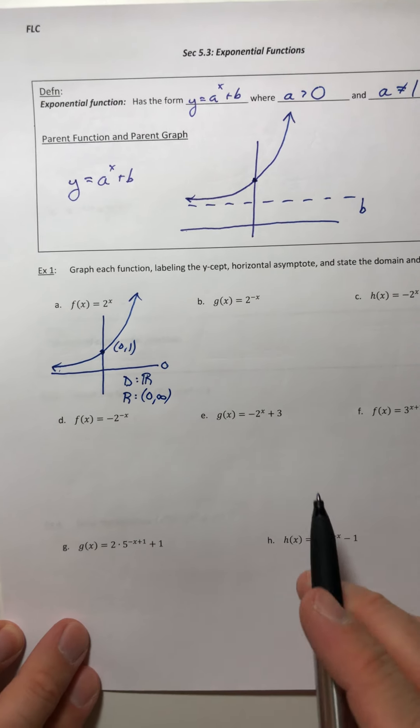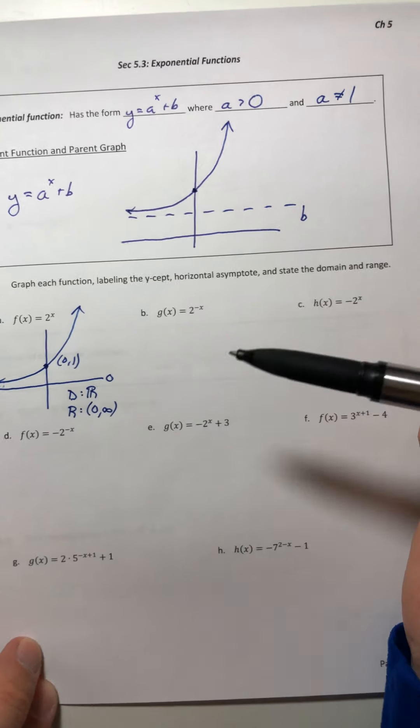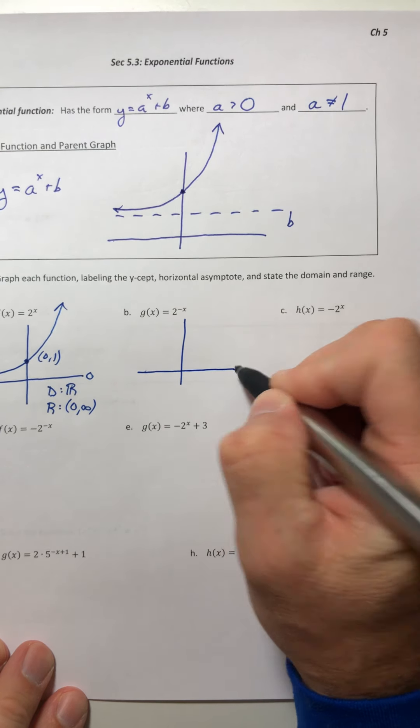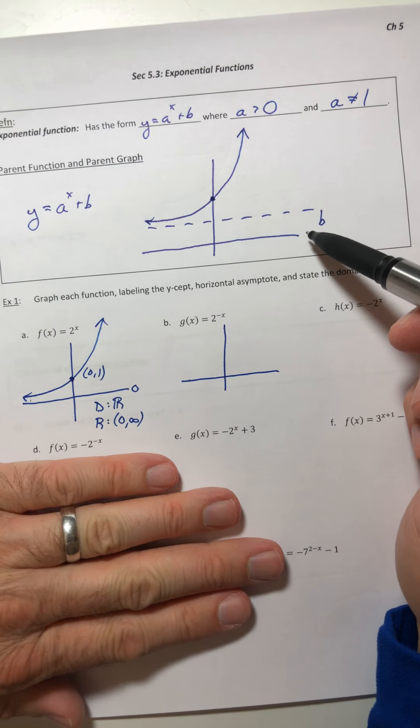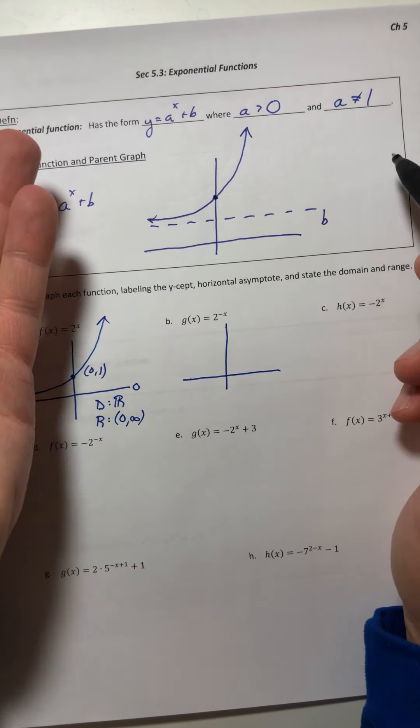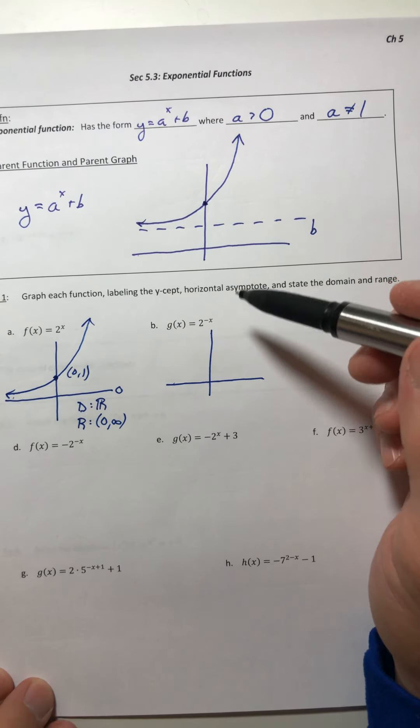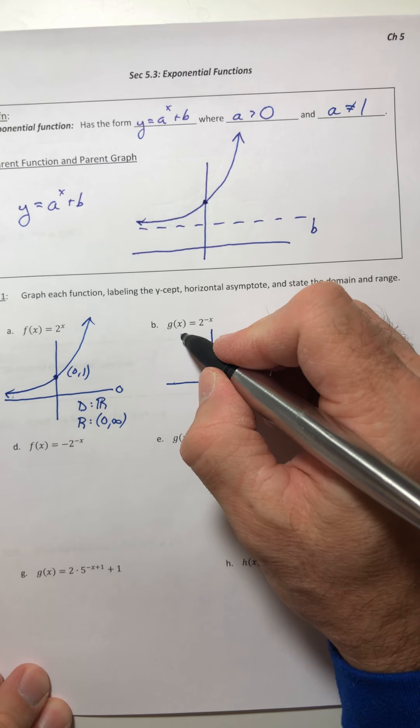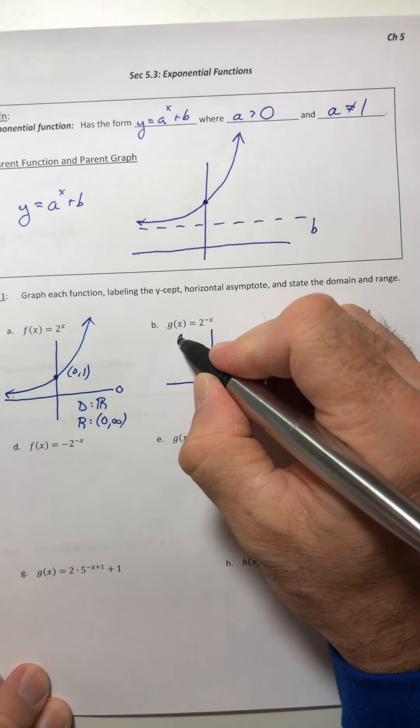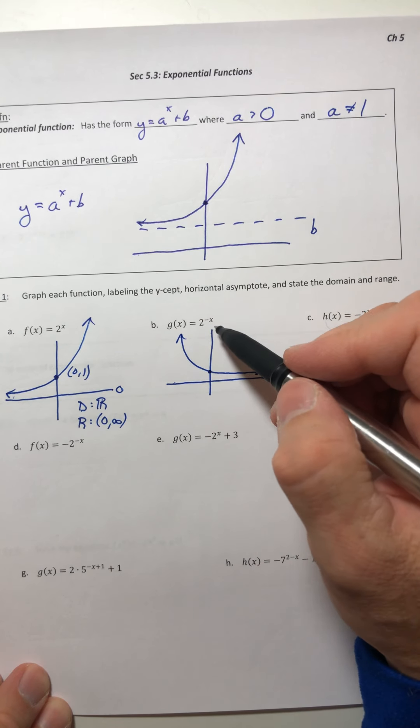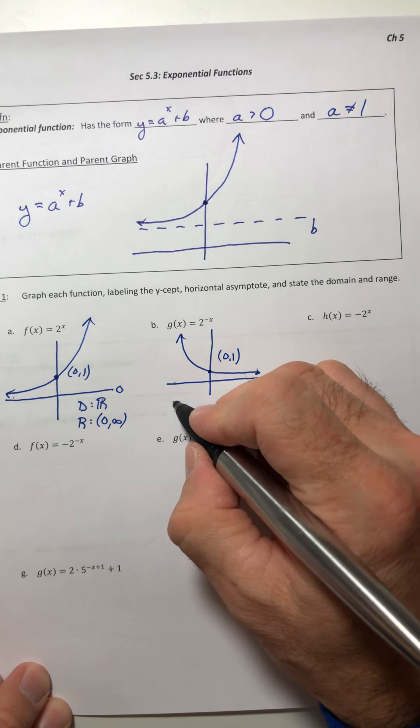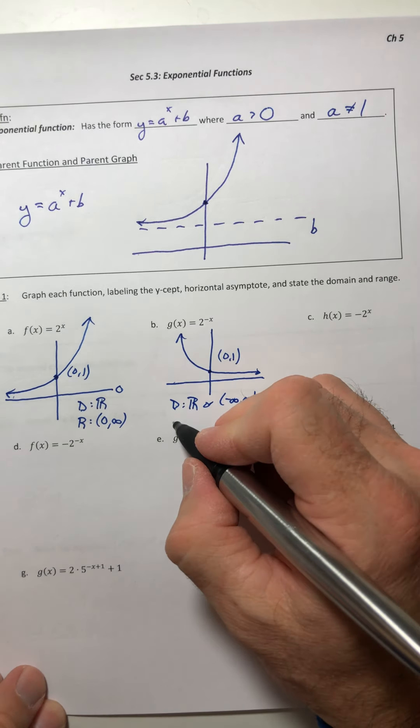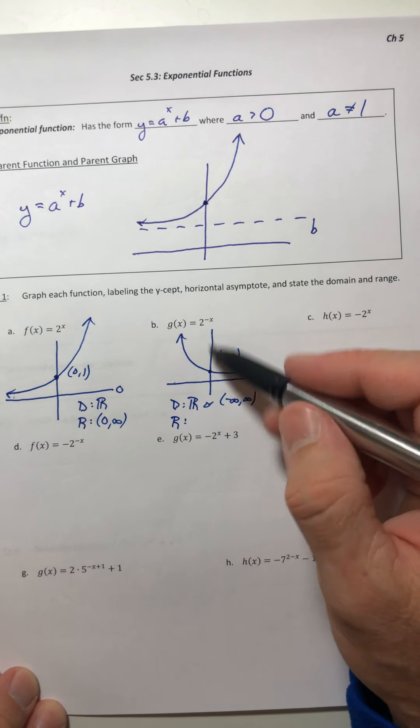Moving on to 2 to the negative x. When your x is negative, it's not going to flip it upside down. Instead, it's going to flip it across the y-axis. When the x is negative itself, things point in opposite directions. So it's going to go up on the left side and flatten out on the right. If you plug in zero for x, you get 0,1 again. Domain still the same thing, still all reals, or if you wanted negative infinity to infinity. And the range is zero to infinity.